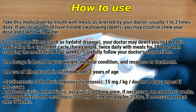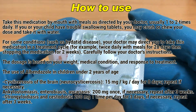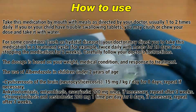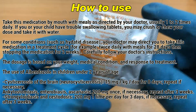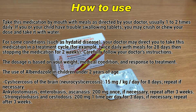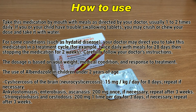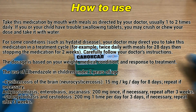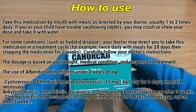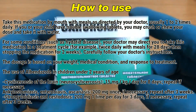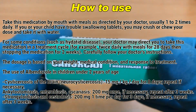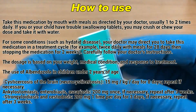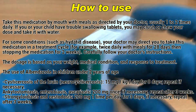Take this medication by mouth with meals as directed by a doctor, usually 1-2 times daily. If you or your child have trouble swallowing tablets, you may crush or chew a dose and take it with water. For some conditions, such as hydatid disease, your doctor may direct you to take this medication in a treatment cycle — for example, twice daily with meals for 28 days, then stopping this medication for 2 weeks. Carefully follow your doctor's instructions. The dosage is based on weight, medical condition, and response to treatment.